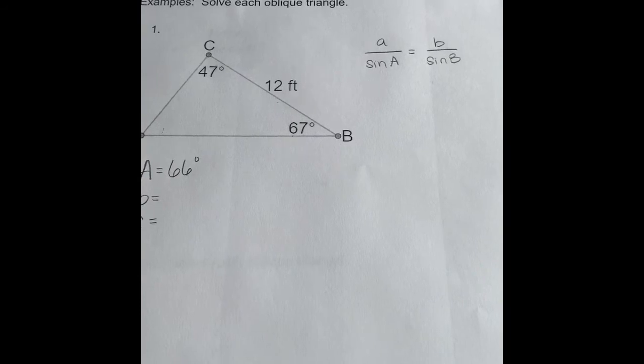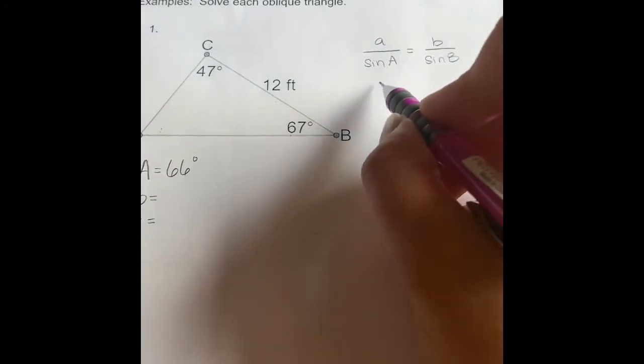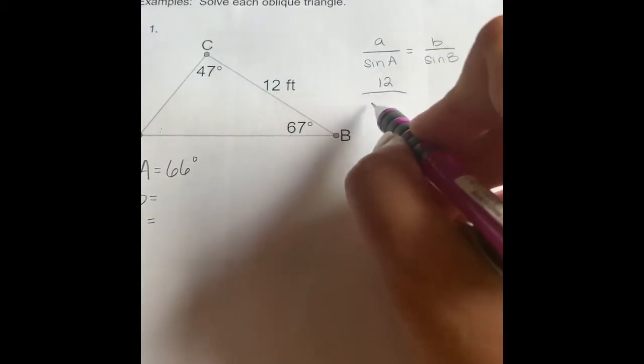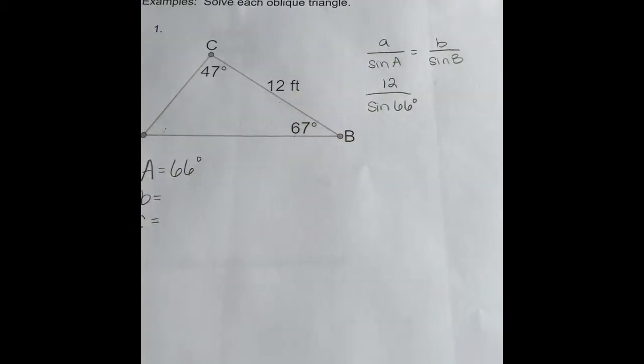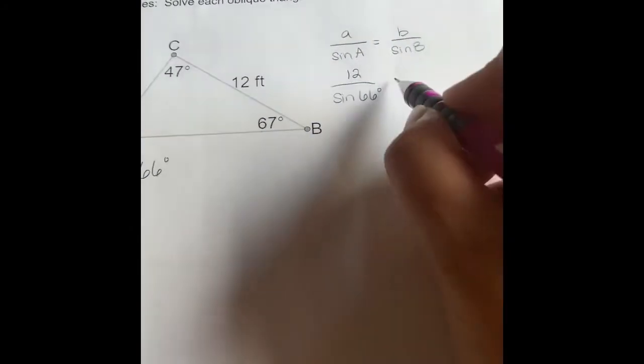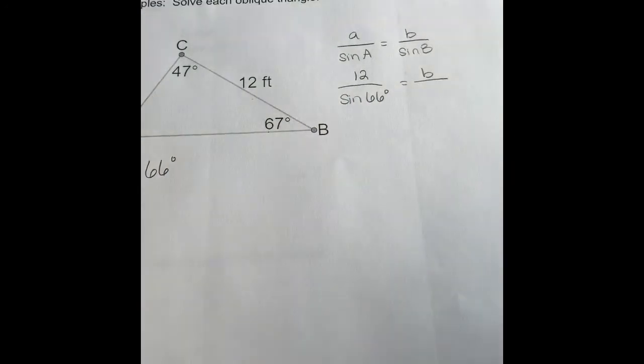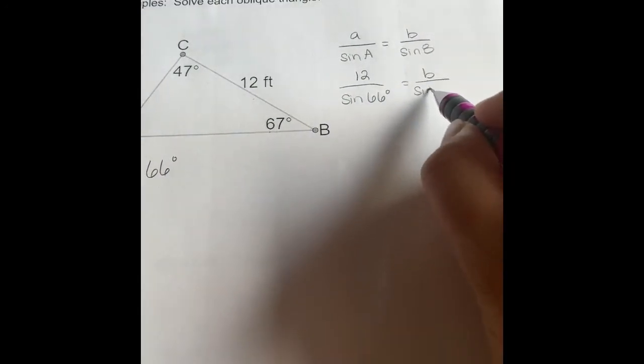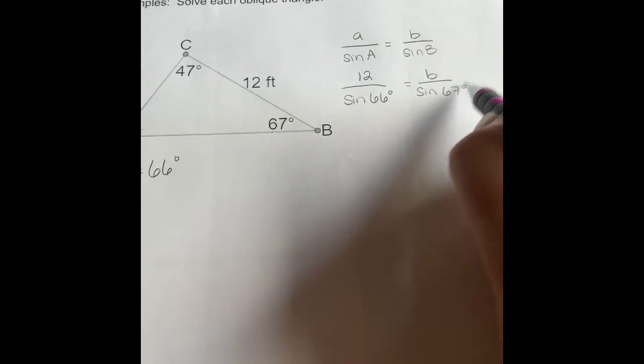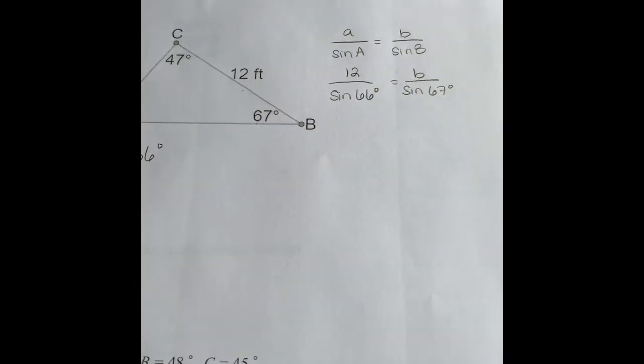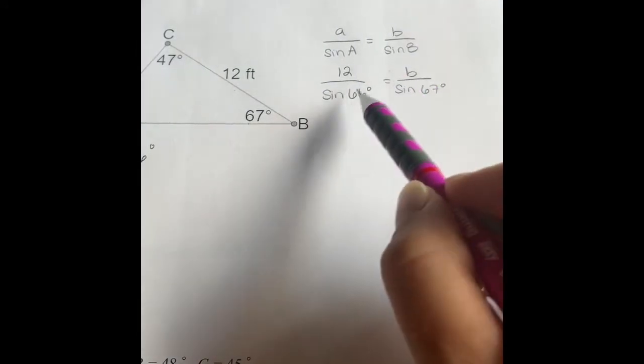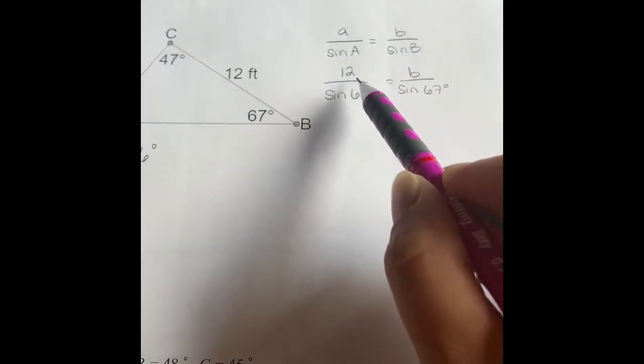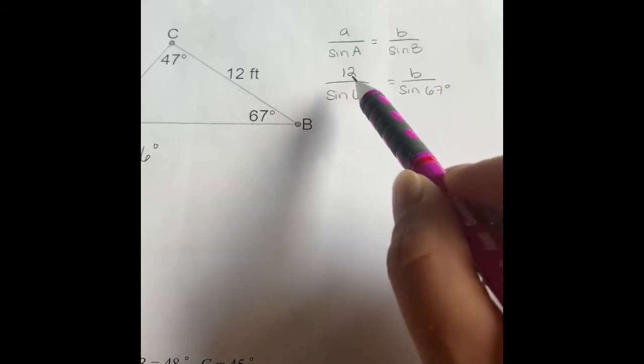So we're just going to fill in the information now. So we know that side A is 12 and we just found angle A was 66 degrees. So we put that information in there. We are looking for side B and we know that the measure of angle B is 67 degrees. So there should only be one unknown in this proportion when you set it up. So now remember to solve a proportion, we just cross multiply.